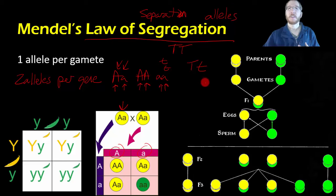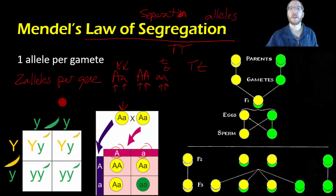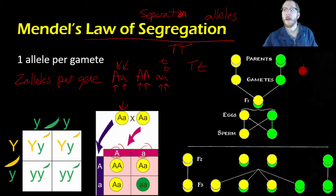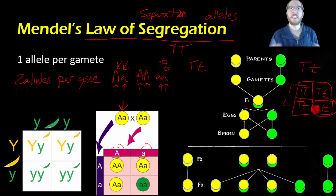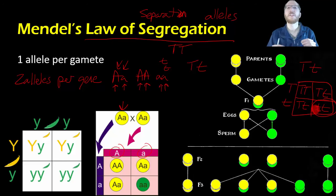After this — and we'll discuss Punnett squares more in class as a way of visualizing how this works — you now have individuals that are big T, little t. These are the F1s that can reproduce with one another. Each of them can pass on a big T or a little t, allowing lots of different combinations. There's even a one-in-four shot at getting two little t's — somebody that's going to be short. This is why the shorts reappeared in the F2 generation, and why the law of segregation explained all of this wonderfully.